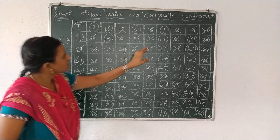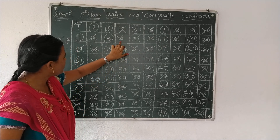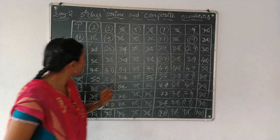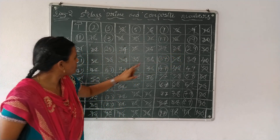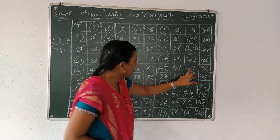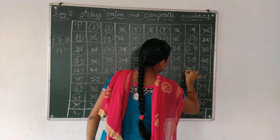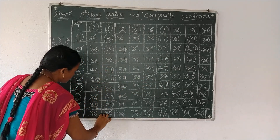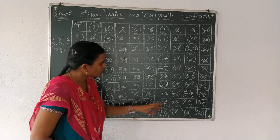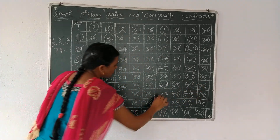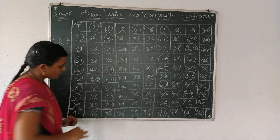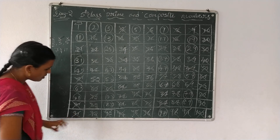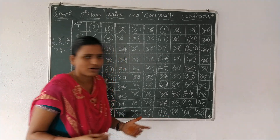Let's take the 7 table. 7, 14, 21, 28, 35, 42, 49, 56, 63 — already cancelled. 70, 77, 84, 91, 98 — already cancelled.